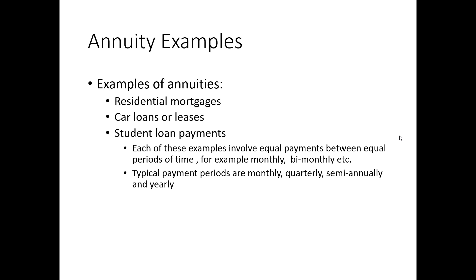Some examples of annuities: residential mortgages — if you want to own your own house and you're getting a mortgage, that is an annuity. If you get a car loan or a car lease, that is an annuity. If you have a student loan and you go to repay it, that becomes an annuity — you'll pay a certain amount, at regular intervals, with equal payments. Boom — you have yourself an annuity.